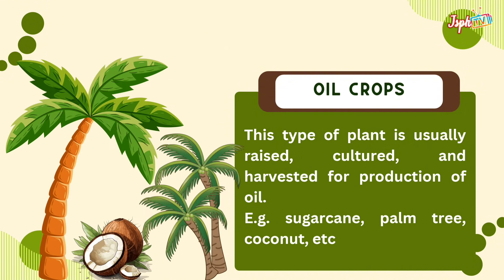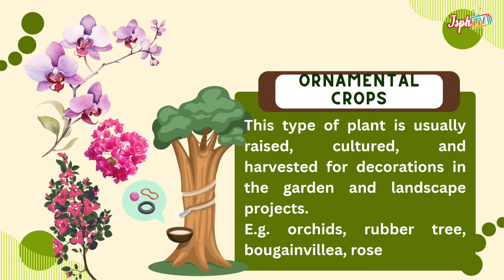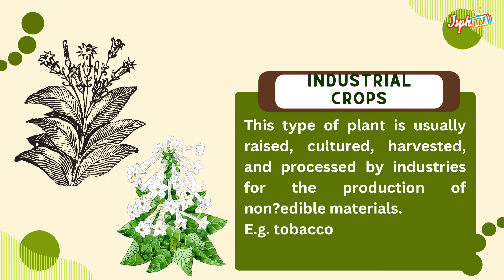Oil crops are raised, cultured, and harvested for the production of oil, like sugarcane, palm tree, and coconut. Ornamental crops are raised, cultured, and harvested for decorations in gardens and landscape projects, like orchids, rubber tree, bougainvillea, and rose. Industrial crops are raised, cultured, harvested, and processed by industries for the production of non-edible materials, like tobacco.